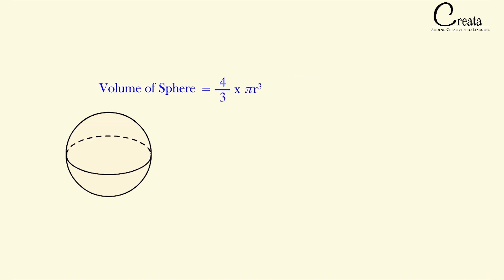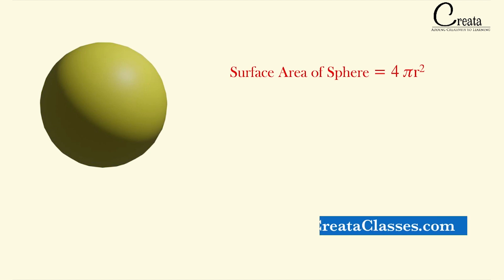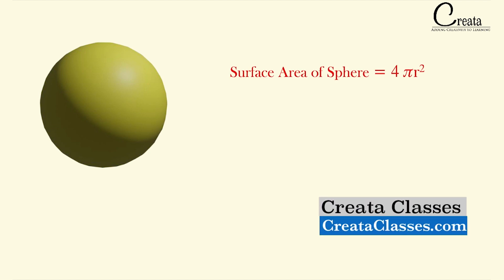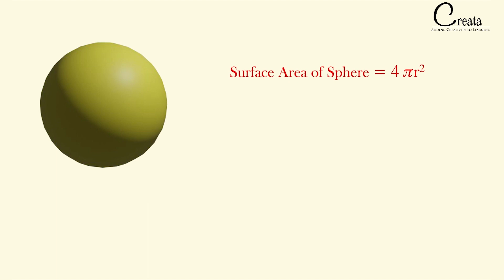So we have done two activities. From the first activity, we got the surface area of the sphere as 4πr². And from the second activity, we got the volume of the sphere as (4/3)πr³.